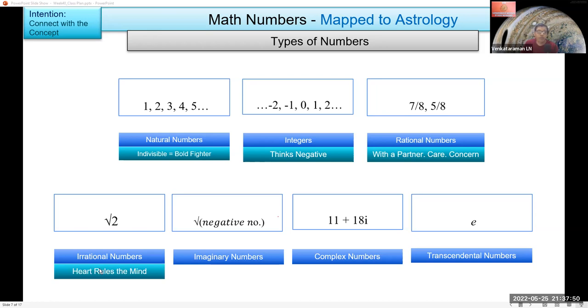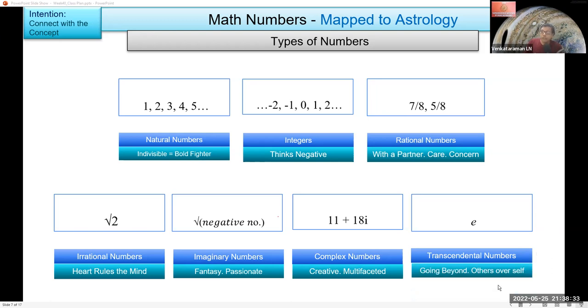Then irrational number, heart rules the mind. Irrational decisions. Imaginary numbers are about fantasy and bringing another word here, passionate. These second parts, wherever you have multiple words, the last and second last would be the ones we need to use to map it to zodiac sign. Creative, multifaceted, because having imaginary as well as real both parts together. Then transcendental number is like going beyond, and the key here is others over the self.